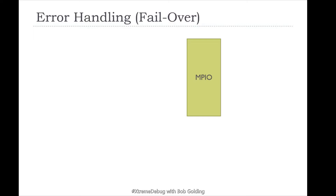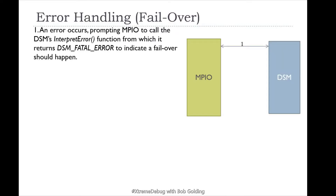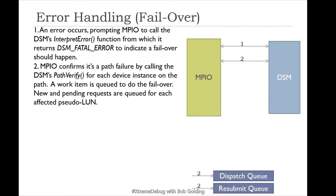For error handling in the event of a failover, an error occurs prompting MPIO to call interpret error. The DSM evaluates the error and returns DSM fatal error if the path needs to be failed over. MPIO confirms the path failure by calling path verify for each device instance on the path. A work item is queued to do the failover. New and pending requests are queued for the affected pseudo-LUN. There are two queues: the dispatch queue and the resubmit queue. The resubmit queue resubmits requests that were already issued and have failed; the dispatch queue holds new requests. When the failover is completed, these queues are cleared out.